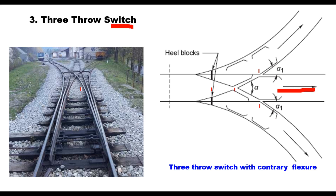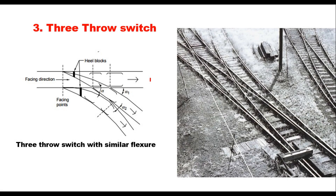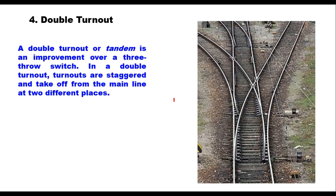A three-throw switch can be with contrary flexor or similar flexor, where both turnouts turn in the same direction as the main line. However, as mentioned, these are not in use nowadays because they have several objectionable features — it is very difficult to operate the points, and the heel block is common to both turnouts. An improvement to this is a double turnout or tandem, where two turnouts are taken off from the straight main line but their points are at different locations, overcoming the defects of the three-throw switch.